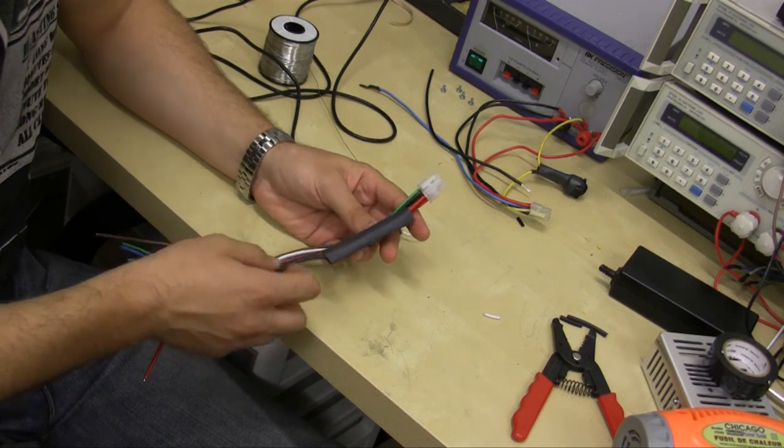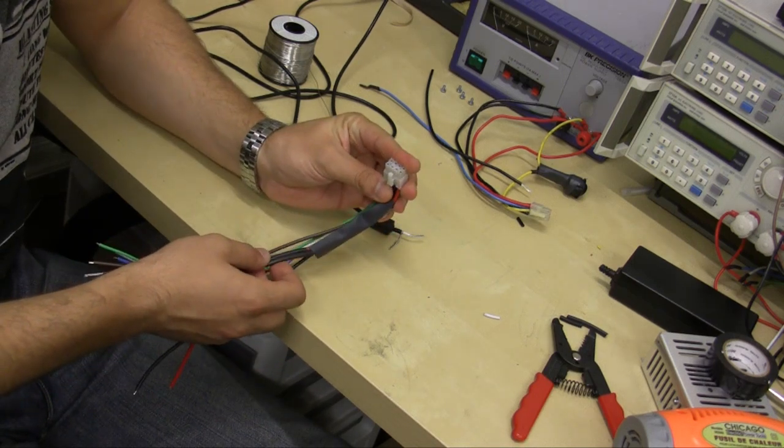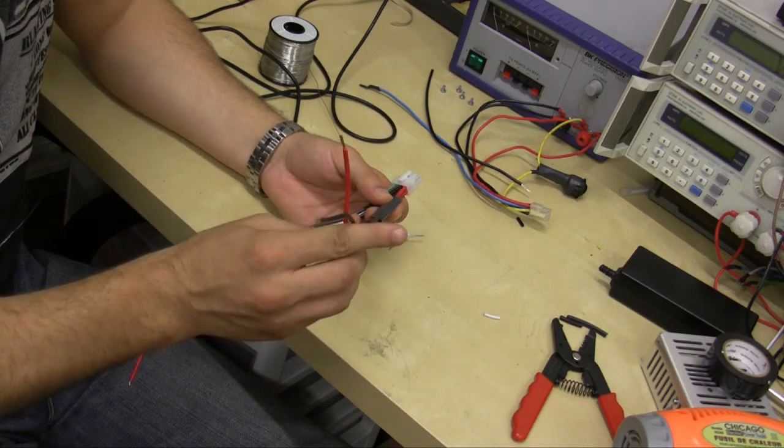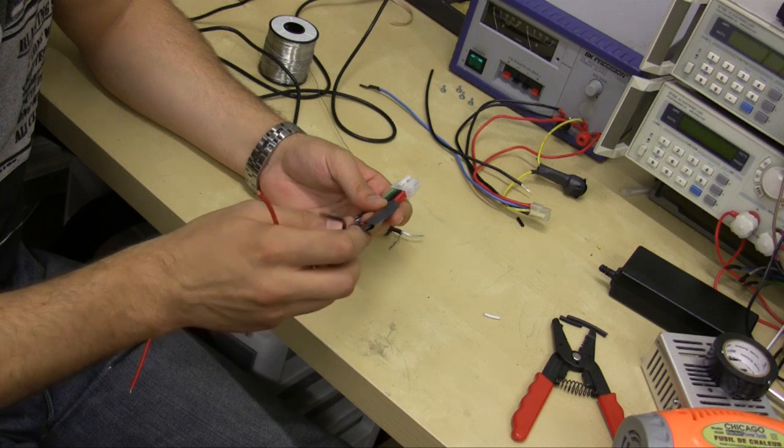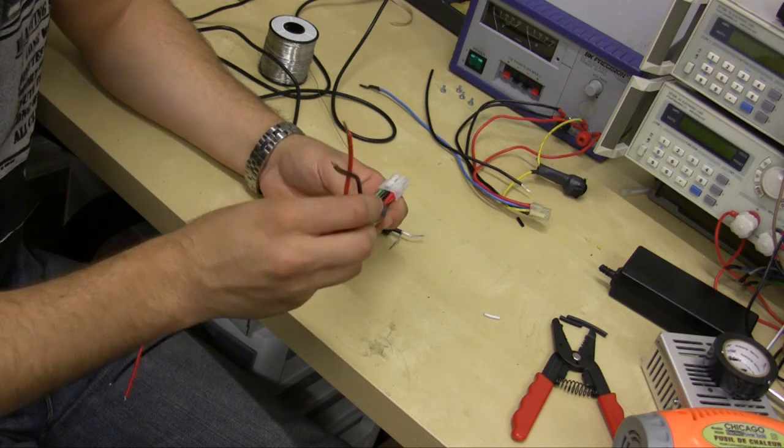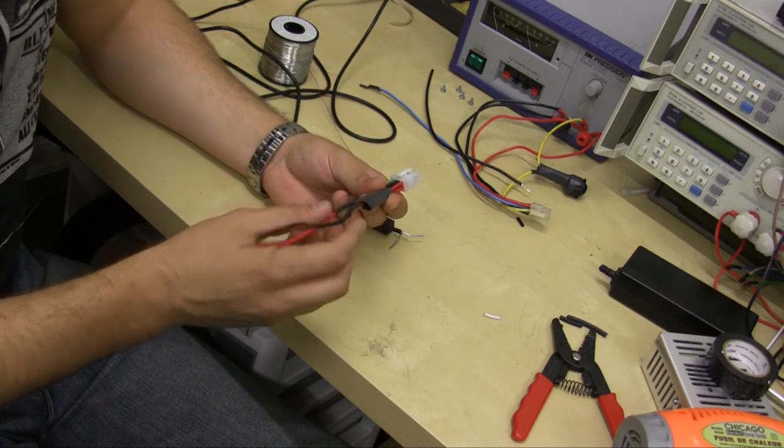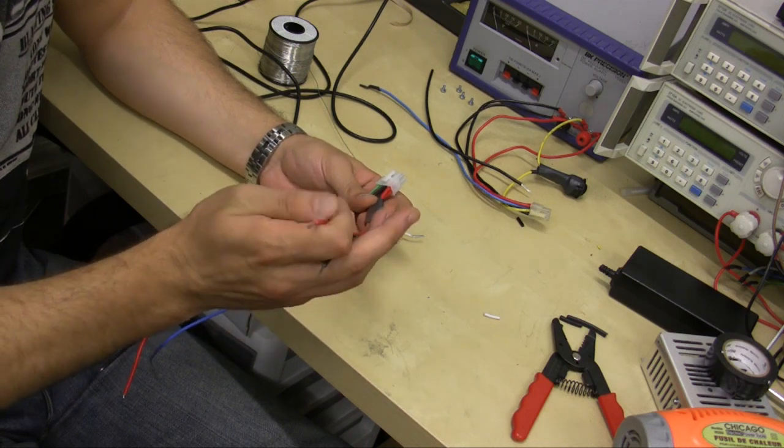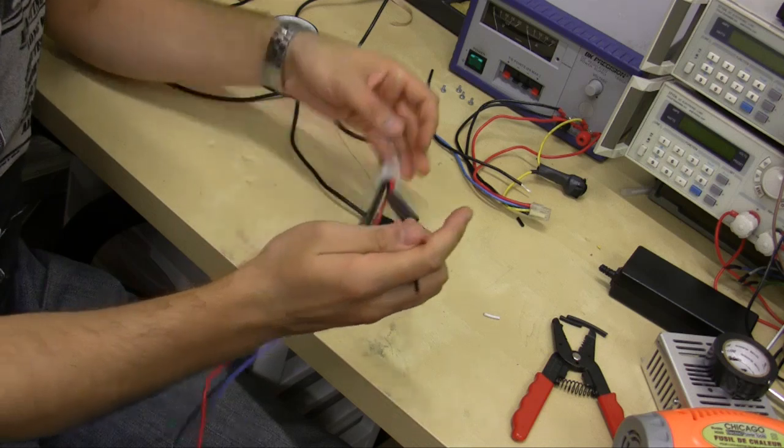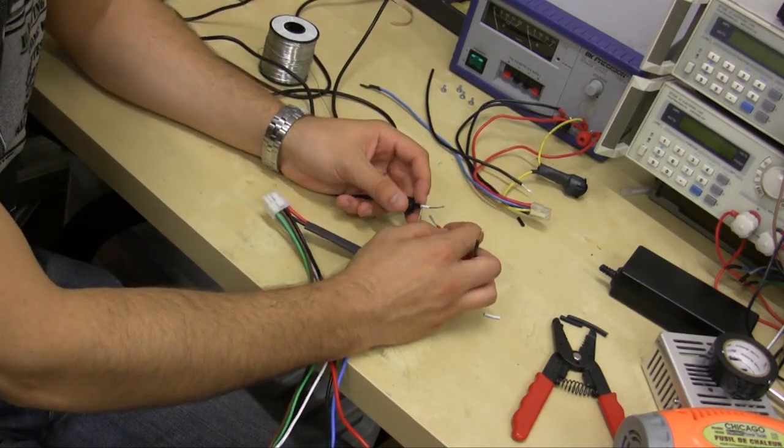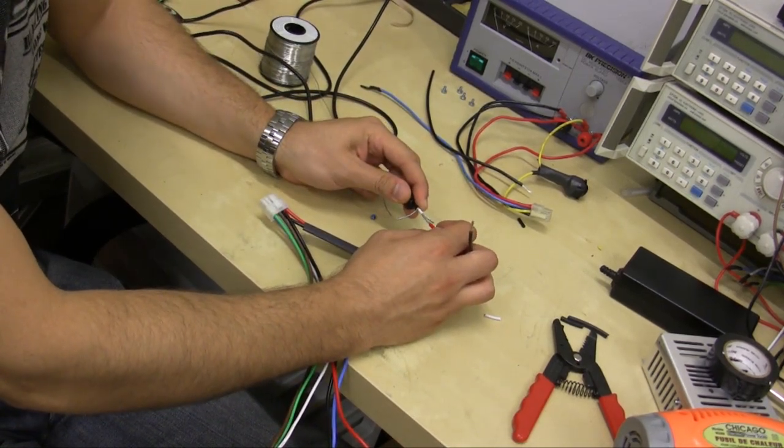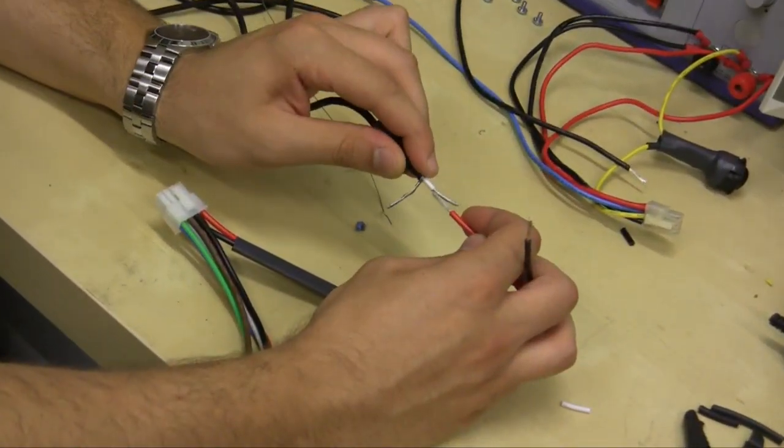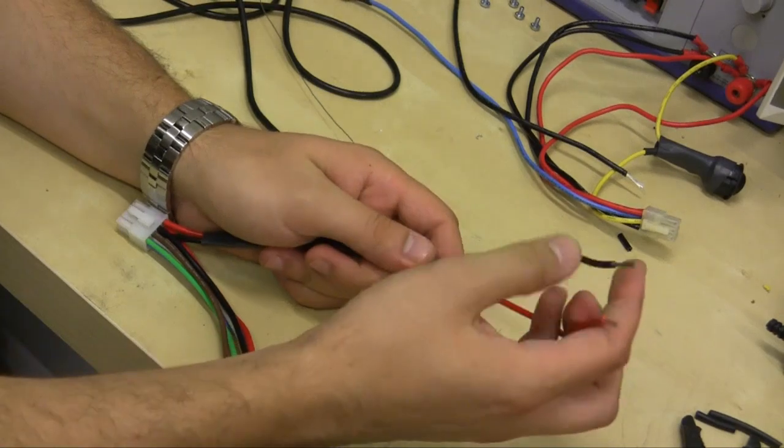So grab your P2140 output harness, which is the 8 pin molex connector. And what you do is you grab one of the reds and one of the black wires. So that's your primary output. And what you do is, before you start soldering, is strip the ends about equal length as you strip on the positive wire on the barrel connector. So about that much. Make sure they're both equal.